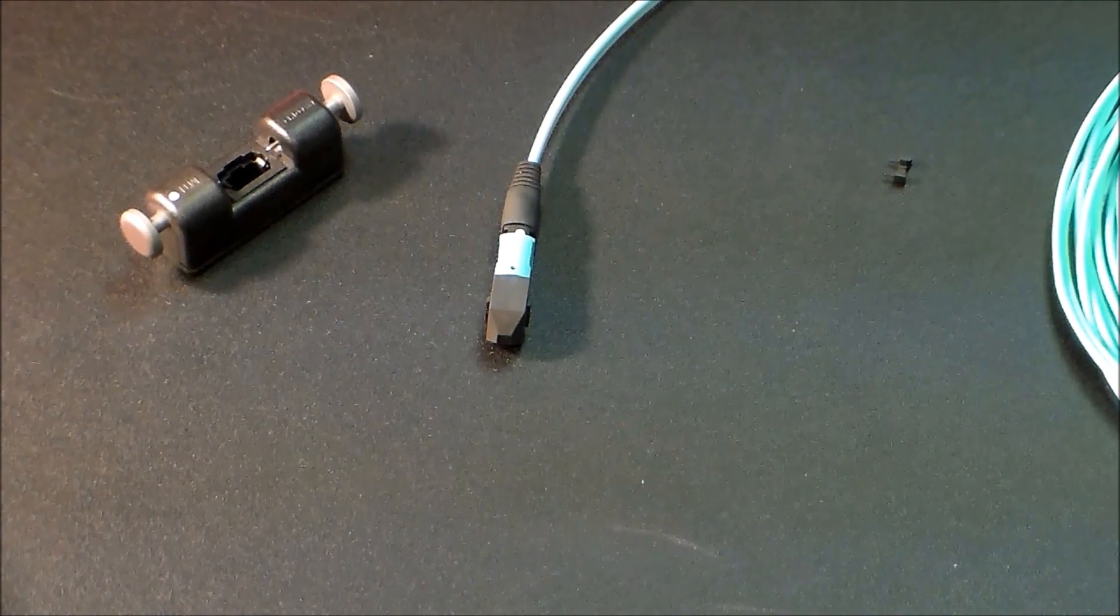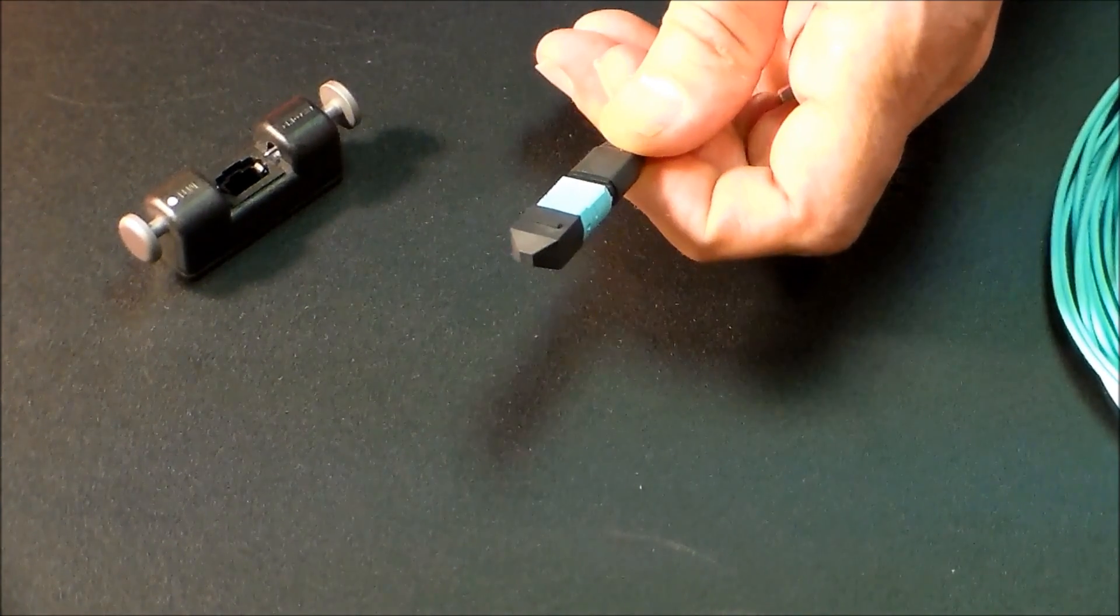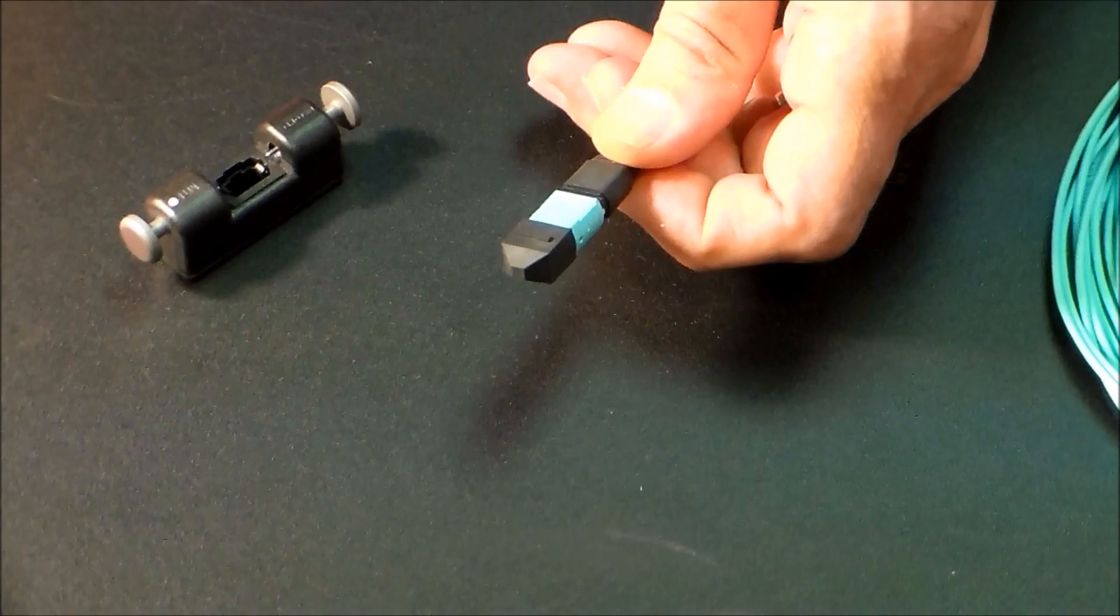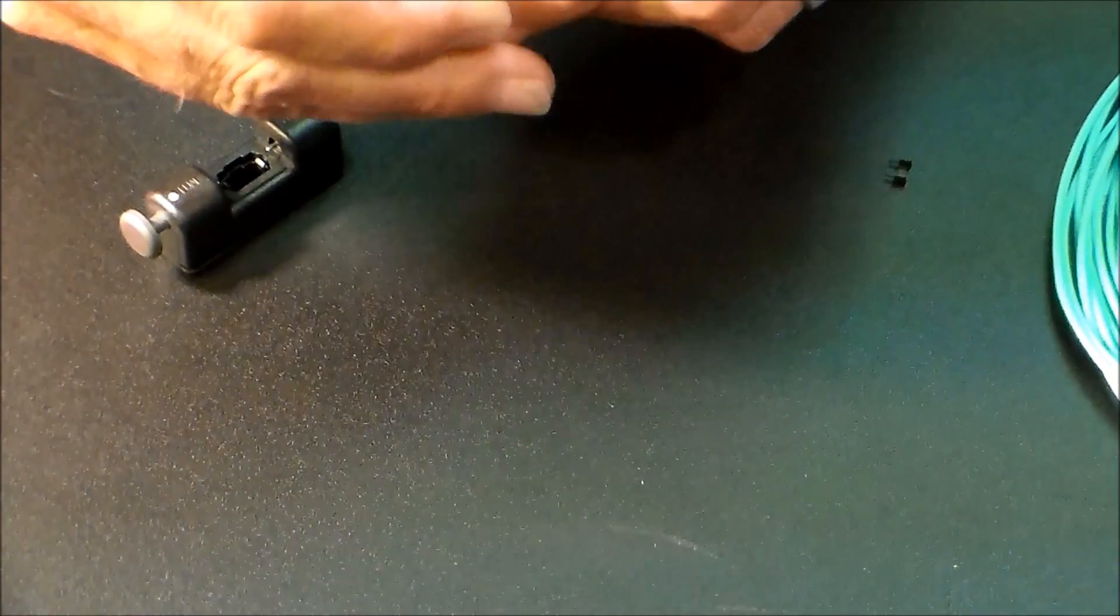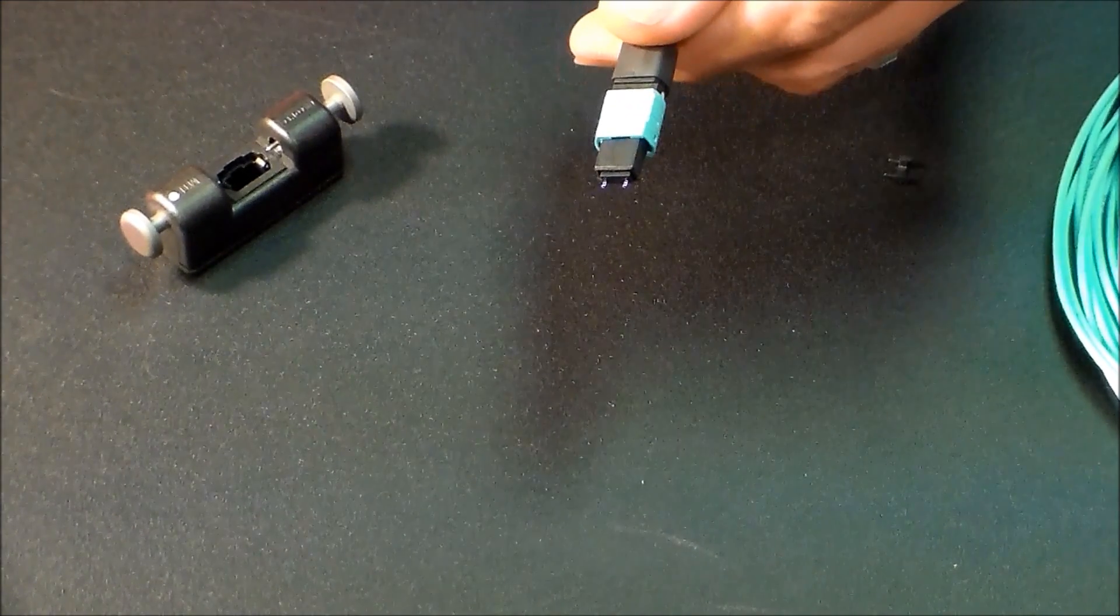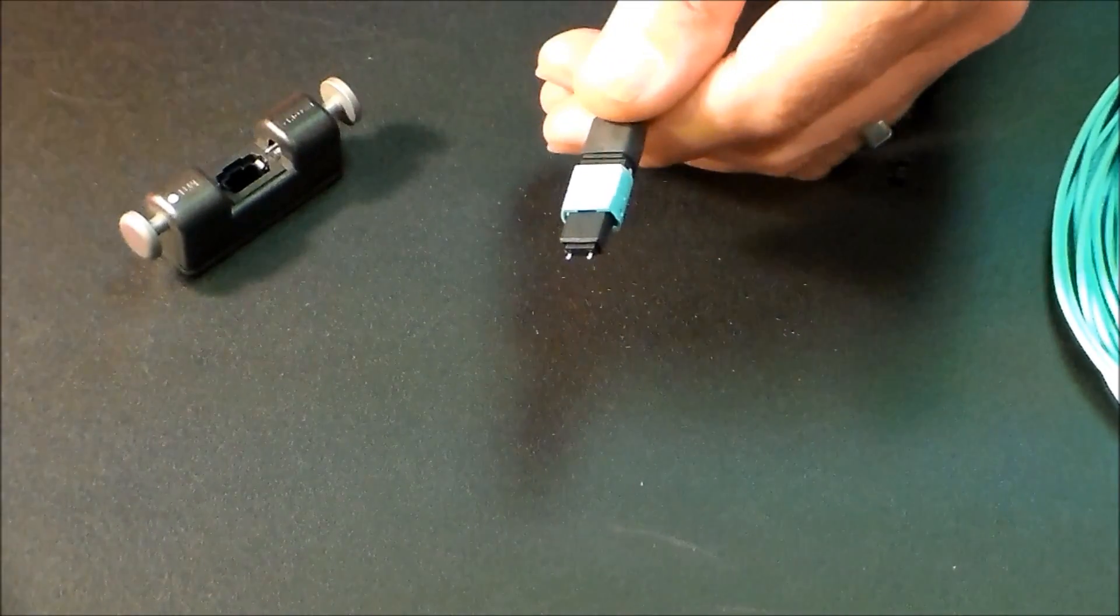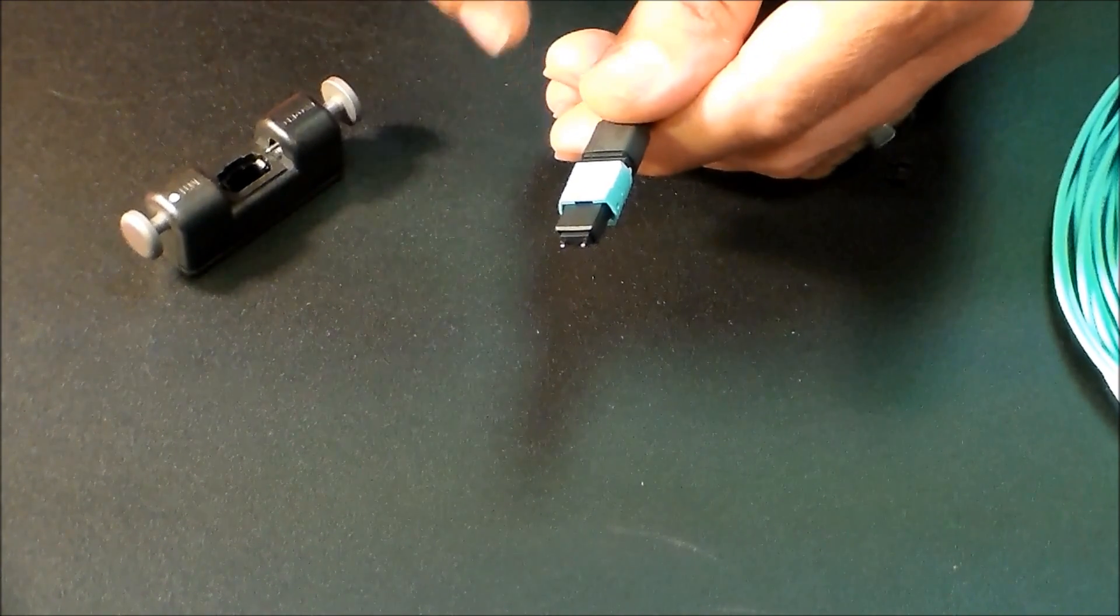Okay, so here we have a U.S. Connect MTP connector, and we're going to want to change the gender on it. This particular one right now, remove the dust cap, and I can see that this has got male pins on it. So I'm going to want to change this out and remove those male pins and make it a female gender.